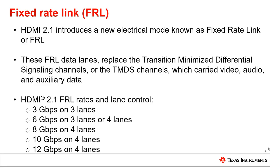HDMI 2.1 introduces a new electrical mode known as Fixed-Rate Link, or FRL. These FRL data lanes replace the Transition-Minimized Differential Signaling channels, or TMDS channels, which carried video, audio, and auxiliary data. Please note that with FRL, the existing TMDS data lanes 0 through 2 are redefined as FRL data lanes 0 through 2, while the TMDS clock lane is actually redefined as FRL data lane 3.